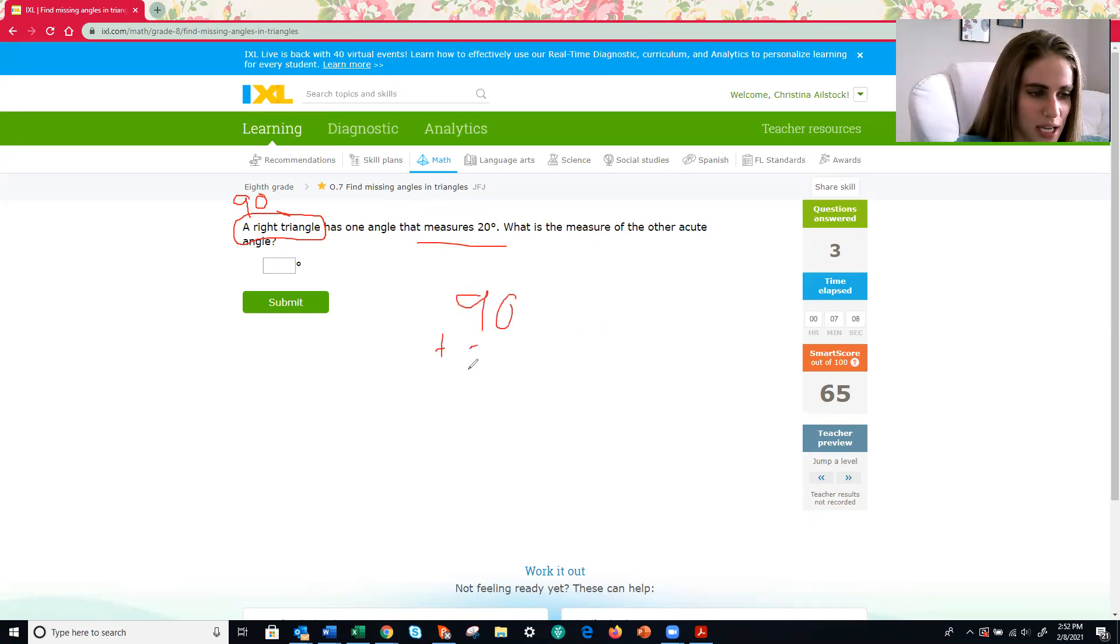All right. 90 plus 20. That's a funky looking nine. 110. What does a triangle always add up to? 180. And this is one that I hope several of you are able to do that subtraction in your head. See if you can figure out what would be 180 minus 110. 70. So our other acute angle, and that's kind of nice. I know that it's right because it told me it needs to be an acute angle and 70 degrees is an acute angle.